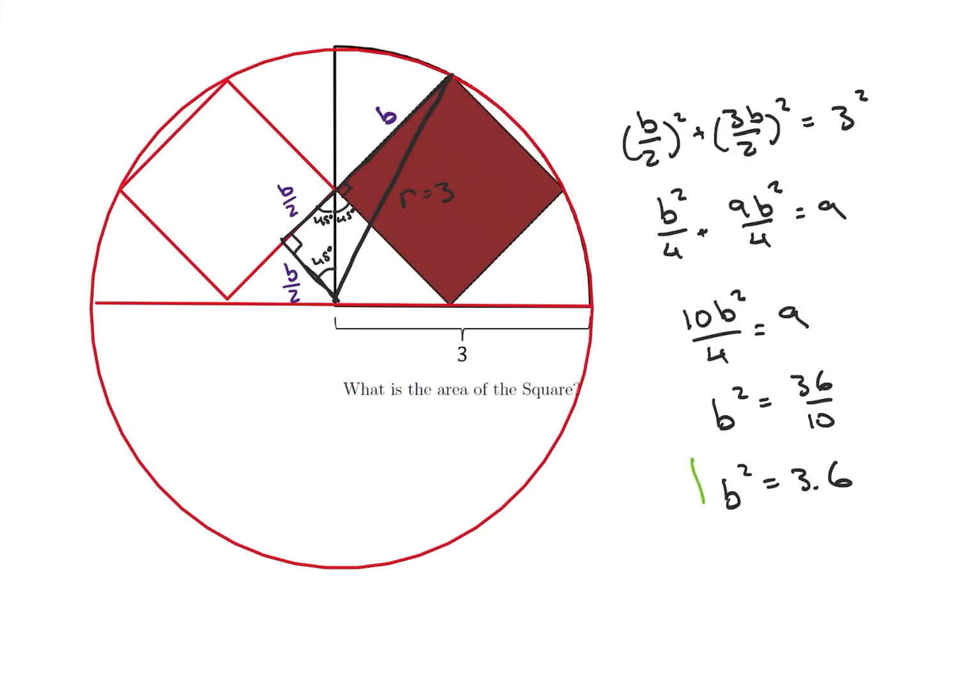And what do you know? B squared is the area of our square. So what we've just done is we've shown that the area of this square is 3.6.